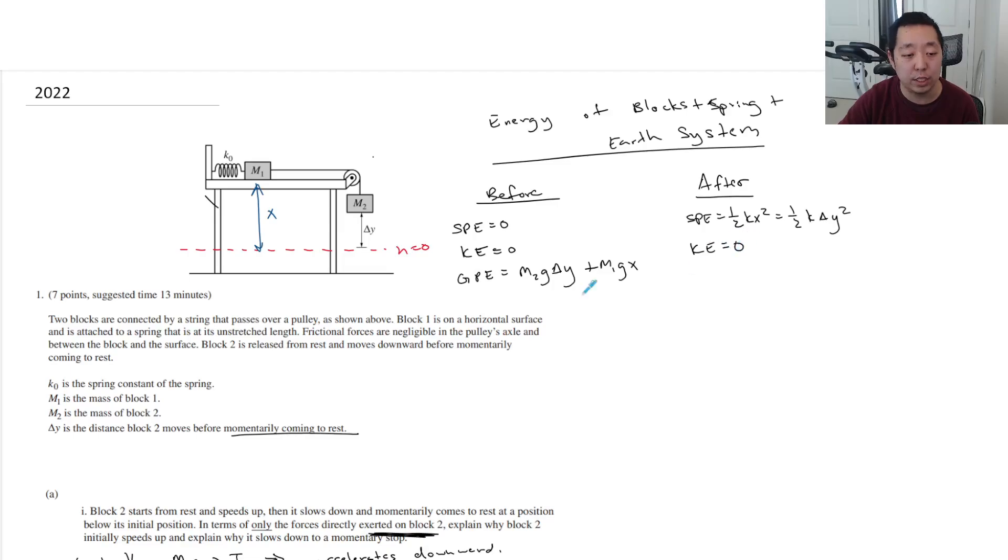The kinetic energy is still zero because it is momentarily at rest, momentarily coming to rest. The kinetic energy is zero there. And so the gravitational potential energy, well, the gravitational potential energy, this blocks down here. So it has no gravitational potential energy. But this guy, M1, is still up there, M1GX.